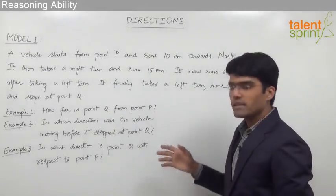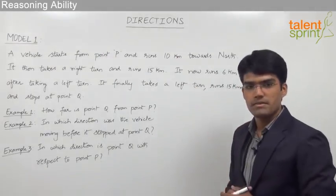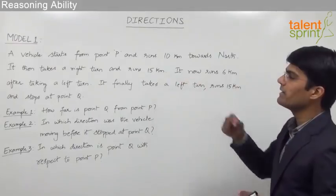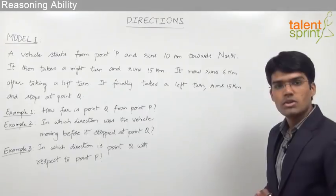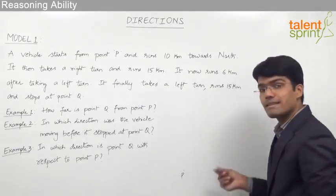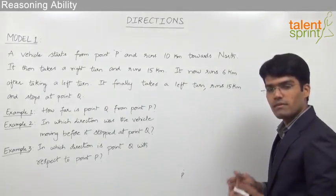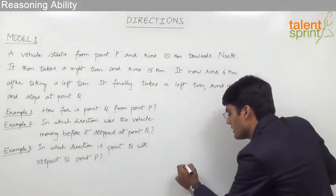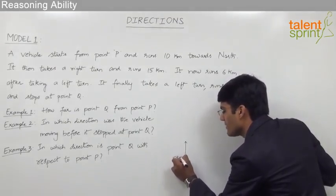To solve all the given questions we need to trace the movement of the vehicle. The vehicle starts from point P and runs 10 kilometers towards north. North should be on top, so the vehicle moves upward on the diagram and covers a distance of 10 kilometers.